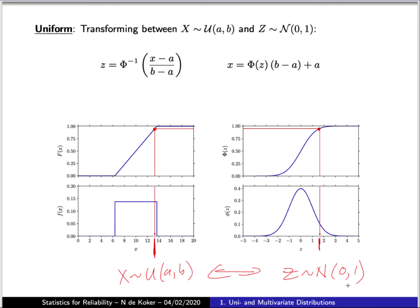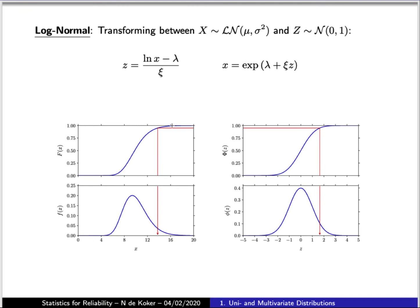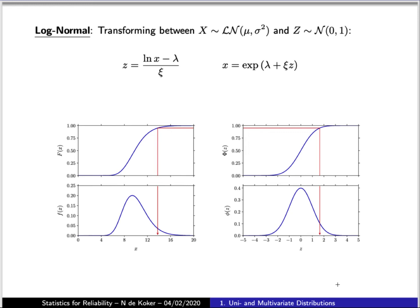Unfortunately, in the case of the uniform distribution, there isn't an analytical equation that relates these two, and one has to follow the path of using the cumulative and inverse cumulative distribution functions. In the case of the log-normal distribution, we similarly have a log-normally distributed random variable with a specific probability value corresponding to a standard normally distributed variable with the same probability value. In this case we can write that transformation analytically, drawing on the fact that the log-normal distribution is the normal distribution of the logarithm of the random variable, so we can use these two analytical equations to do the transformation.